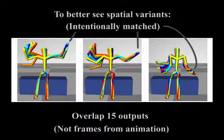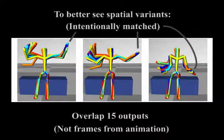In each frame, we intentionally match the left arm position as much as possible, so that we can better see the spatial variation in the right arm.